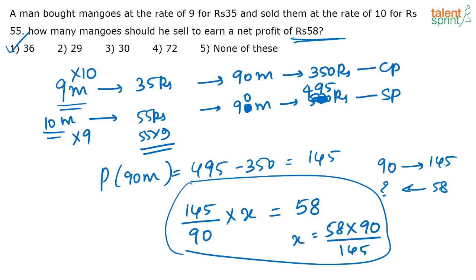Generally, whenever such questions come where you are buying at a rate for so many mangoes and selling at a rate and the number is different, always try to take this LCM like this and bring it to a common number so that it's easier to calculate.